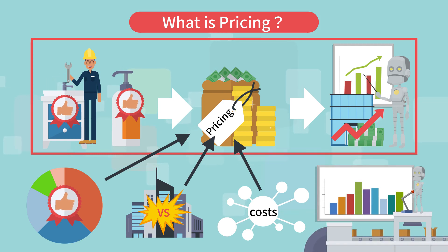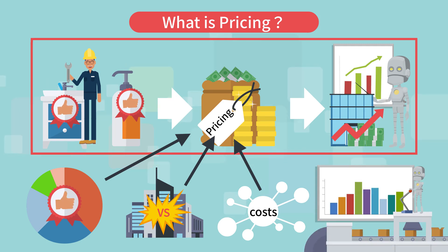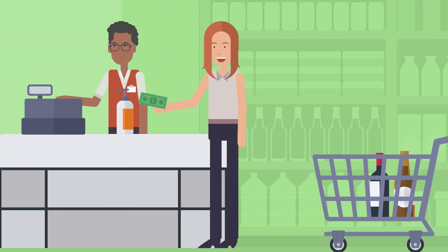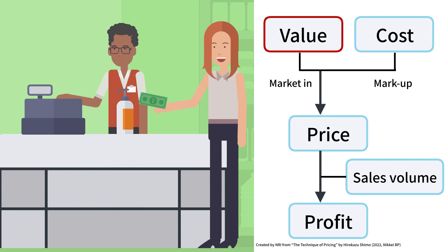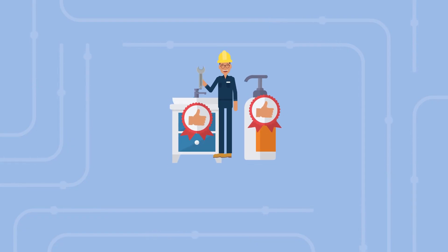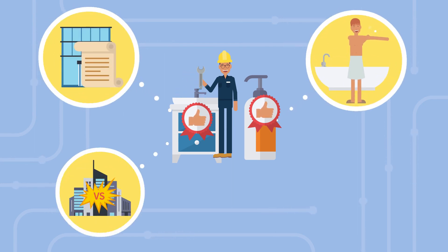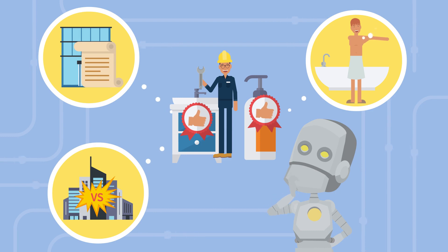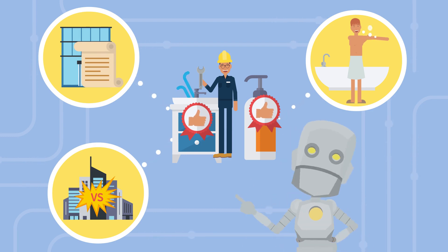Controlling sales volume based on the price helps achieve the target profit. Price is the amount of money that consumers pay to obtain the value of a product or service, and it is a parameter in the business process of pricing. The value of a product or service depends on its function, brand history, and competitive environment. Determining them is the key point of pricing.